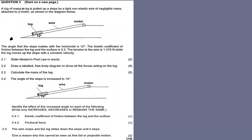A log of mass m kilograms is pulled up a slope by a light non-elastic wire of negligible mass attached to a motor, as shown in the diagram below. The angle that the slope makes with the horizontal is 12 degrees. The kinetic coefficient of friction between the log and the surface is 0.3. The tension in the wire is 1570 newtons.